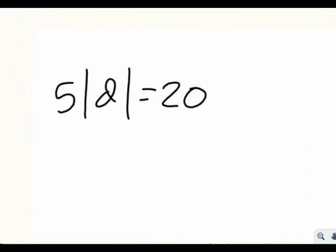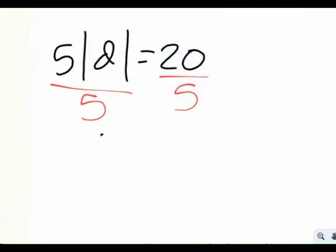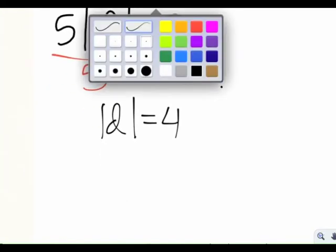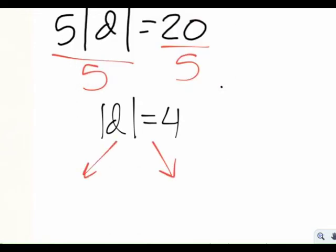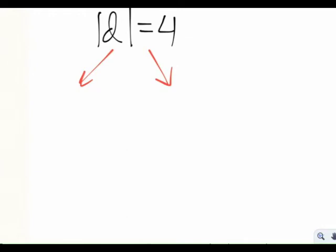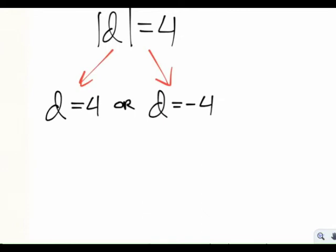Let's look at this equation. As always, the very first step is to isolate the absolute value. In order to do that here, we have to divide both sides by 5. So the absolute value of D is equal to positive 4. From here, we're going to split the absolute value equation into two: what's inside the absolute value equals positive 4, and what's inside the absolute value equals negative 4. The connecting word is OR.